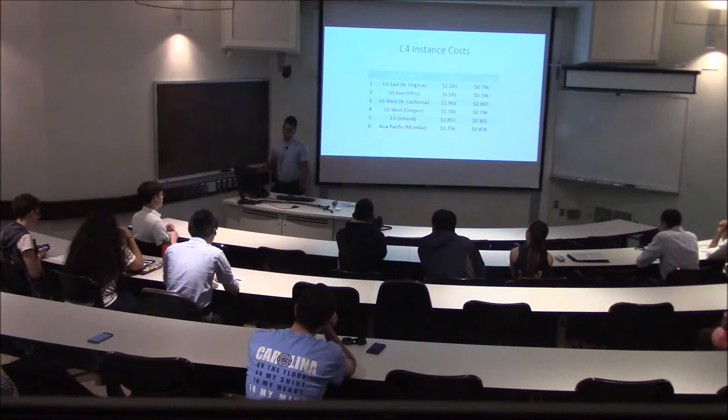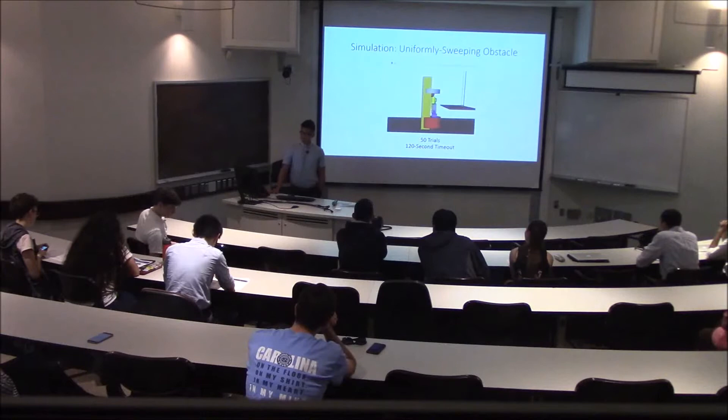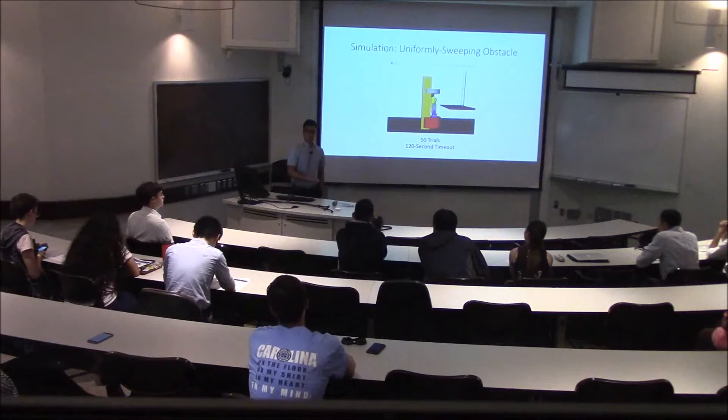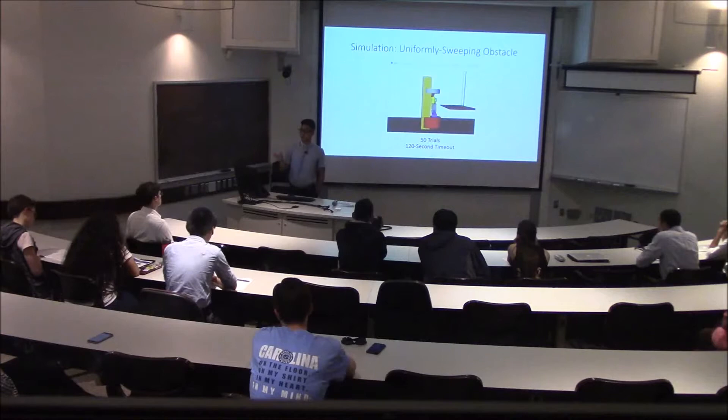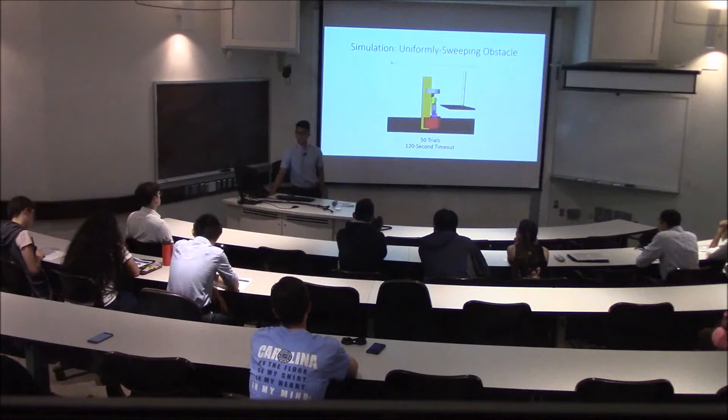Our simulations were run in a simulated environment rather than physical trials, in order to have a more controlled experiment. We simulated a uniformly moving obstacle which is detected by the robot in real time — even though it moves uniformly, the robot does not know where it will be in the future, so it detects position in real time. We ran 50 trials with a two-minute timeout for each run.